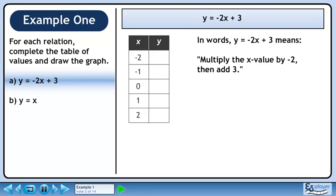In words, y equals minus 2x plus 3 means multiply the x value by negative 2, then add 3.